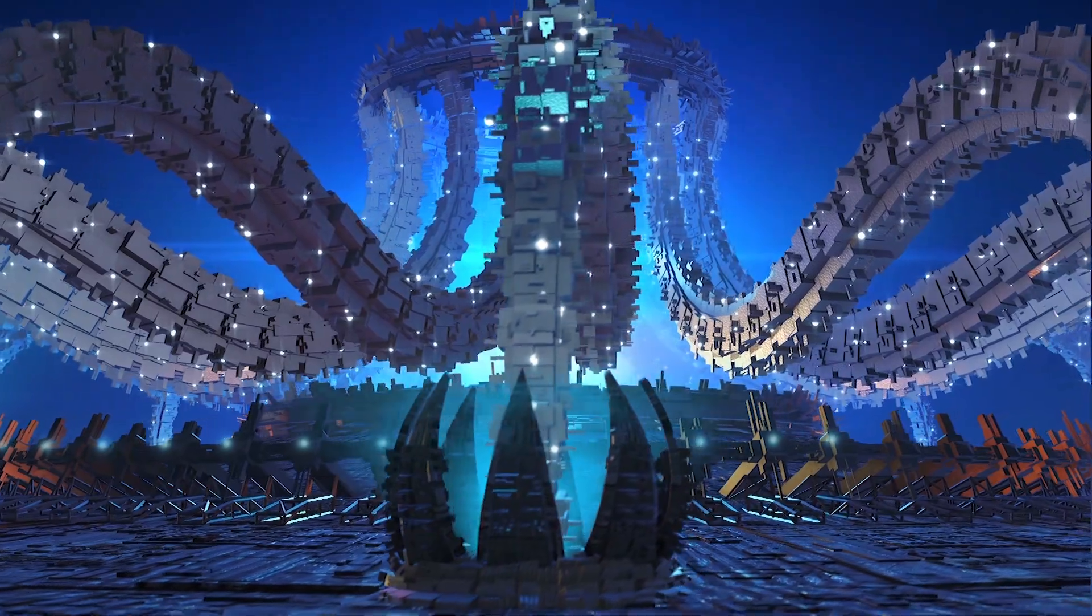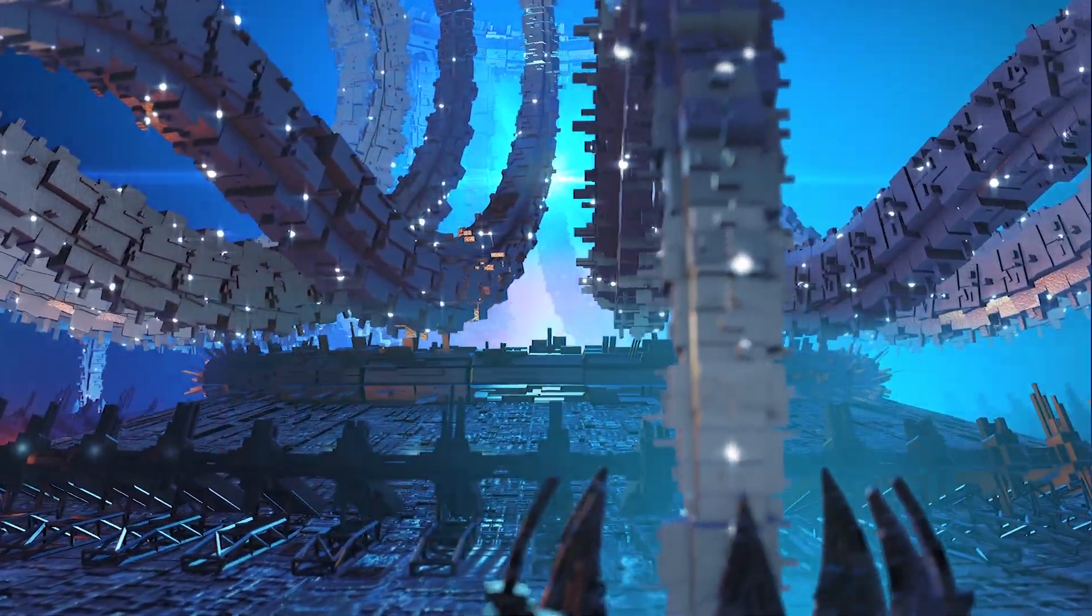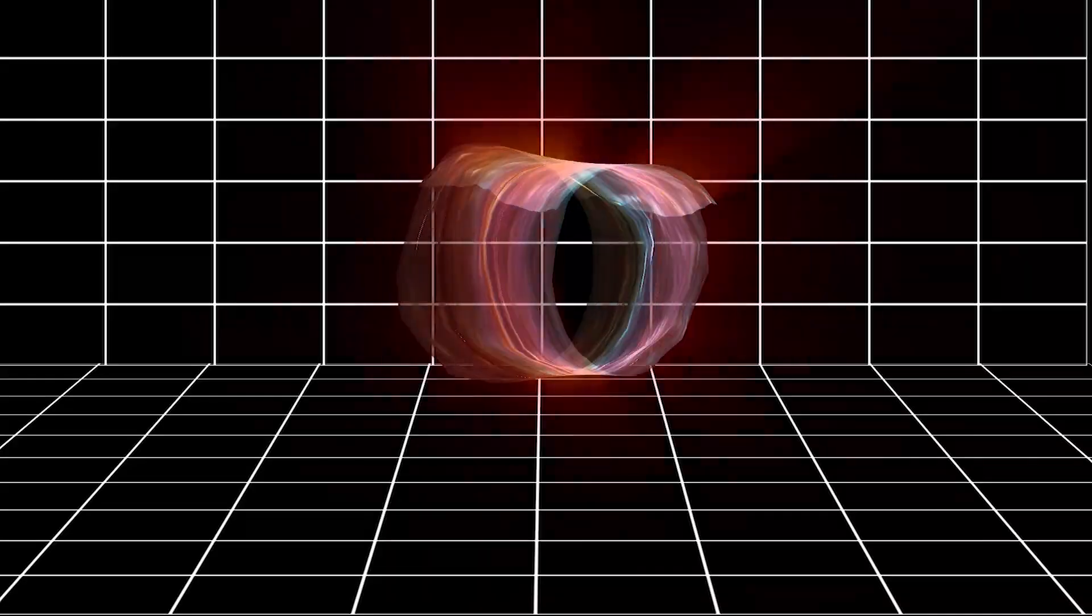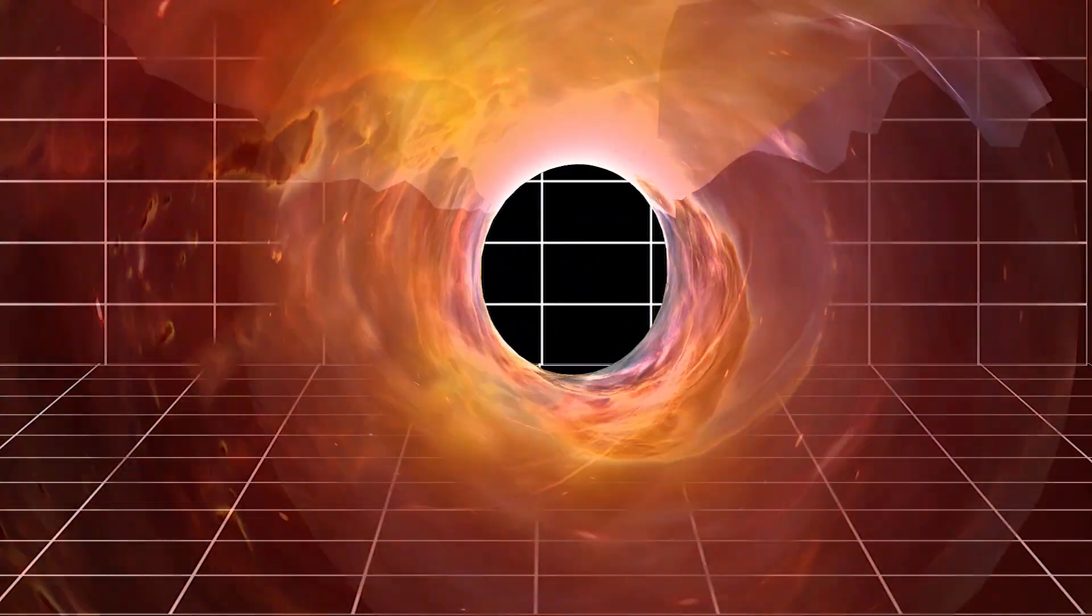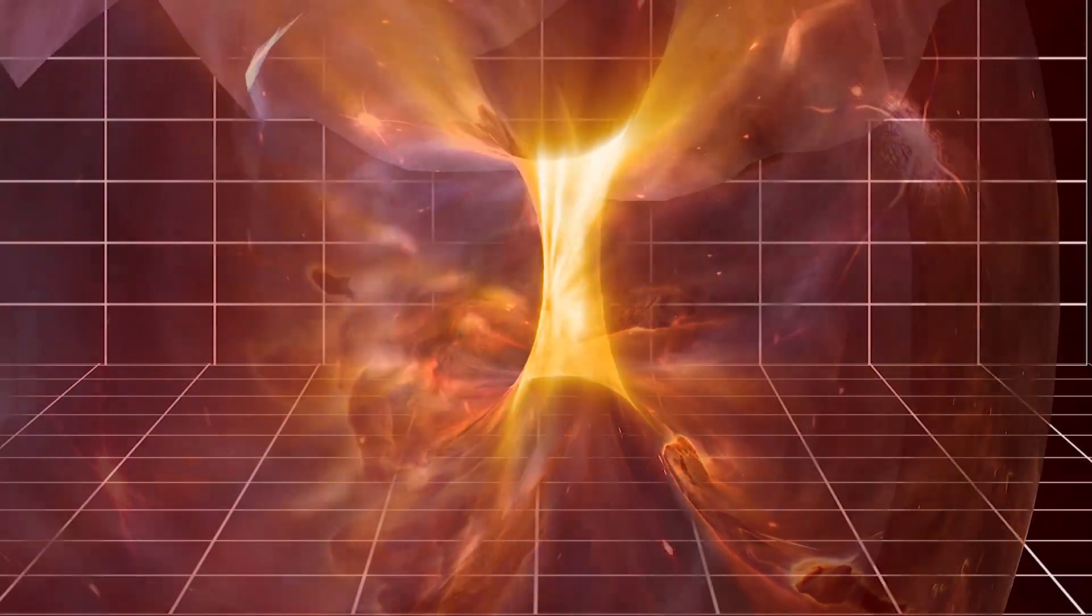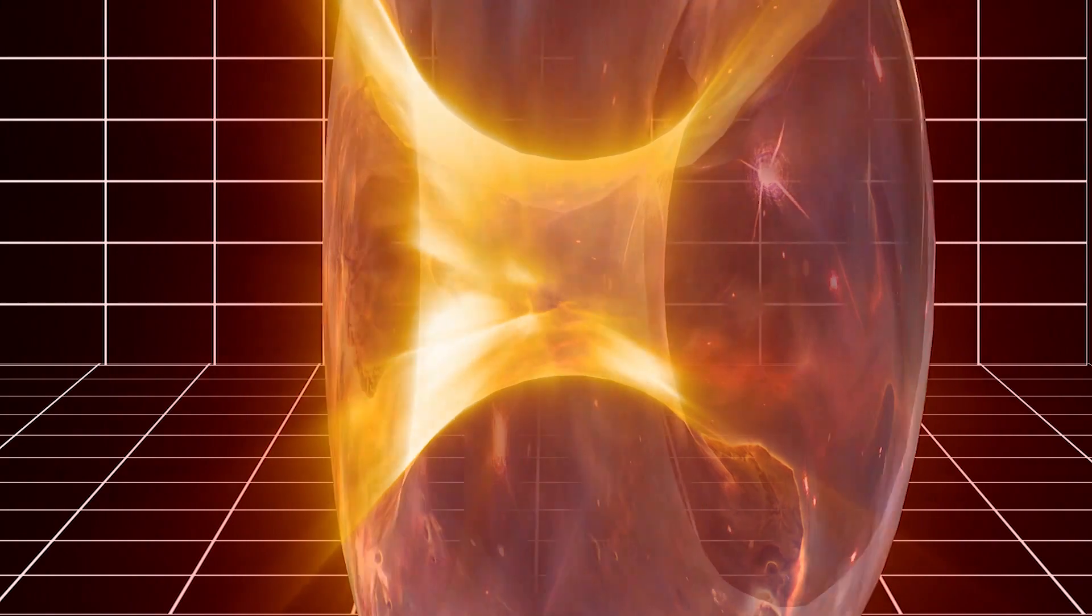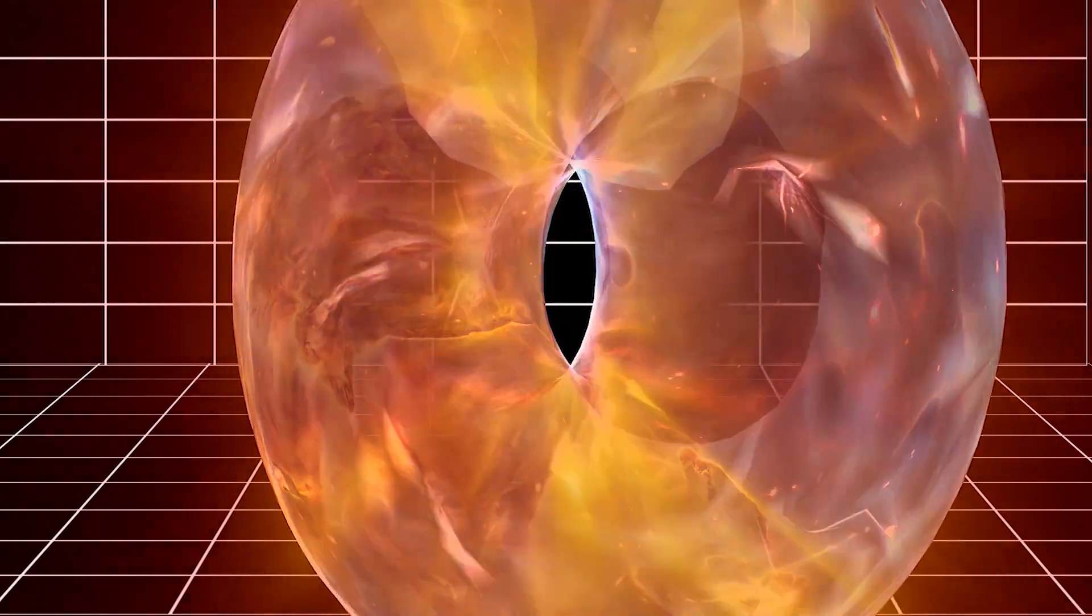However, another time travel research suggests time machines are possible without exotic matter. The work proposes creating a donut-shaped hole enveloped within a sphere of normal matter which carries whatever's inside it through space and time along a large circular path.